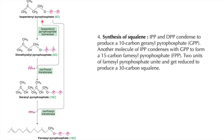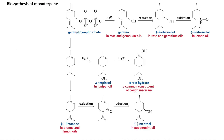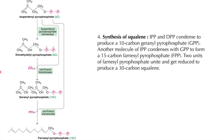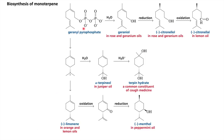The 10-carbon geranyl pyrophosphate further combines with another isopentenyl pyrophosphate in a head-to-tail manner to give farnesyl pyrophosphate, a 15-carbon terpene. Monoterpene synthesis begins from geranyl pyrophosphate, while cholesterol biosynthesis proceeds from farnesyl pyrophosphate.